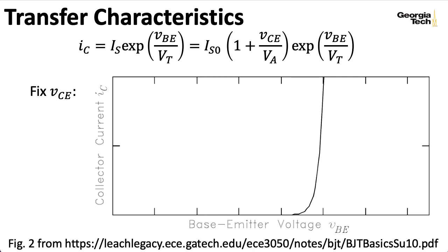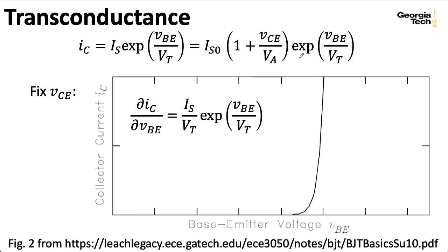In the next lecture, we'll create some small signal models for BJTs. To do this, we're going to need the slope of these kinds of curves. So, the slope of a transfer characteristic curve is referred to as the transconductance. So, taking the partial derivative of IC with respect to VBE, when I take the derivative of the exponent, a 1 over VT shows up in front.